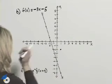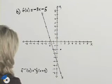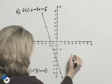We'll do a few more. This point negative 3, 4 becomes 4, negative 3.